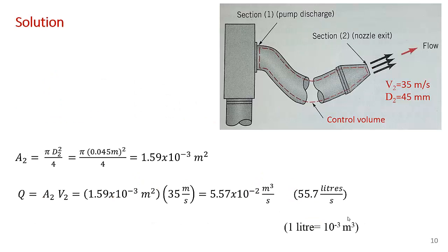The area at section 2 is just πD₂² over 4, so π times 0.045 meters squared divided by 4. We get for the area 1.59×10⁻³ square meters. Then we multiply that area by the mean velocity at section 2, which is 35 meters per second, to get the volume flow rate. Check out the units: area in meters squared times velocity in meters per second gives cubic meters per second, which is exactly what we want for the volume flow rate. That's the answer: 5.57×10⁻² cubic meters per second.